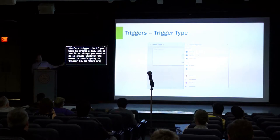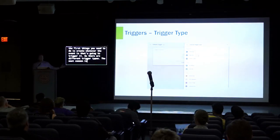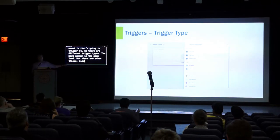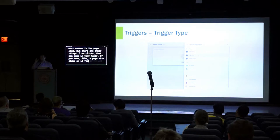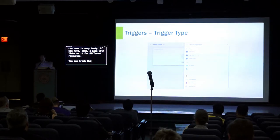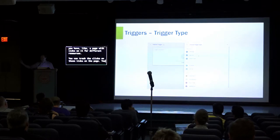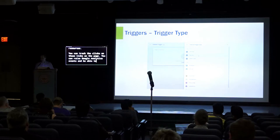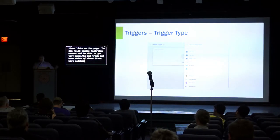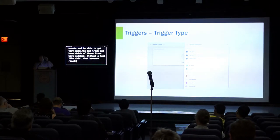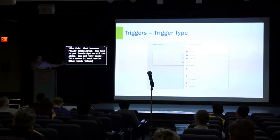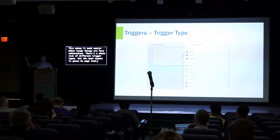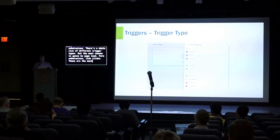There are different trigger types. The most common is the page load. But there are other things like clicks that can come in very handy — if you have a page with links for different resources, you can track the clicks on those links and raise Google Analytics events to know which links were clicked. Without a tool like this, that becomes really complicated — you have to put JavaScript on all the links and it can get very messy. This makes it much easier. Other handy things are form submissions. The most common triggers are page load, form submissions, and link clicks.